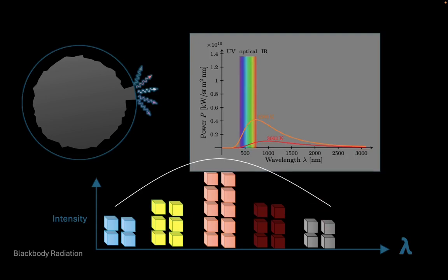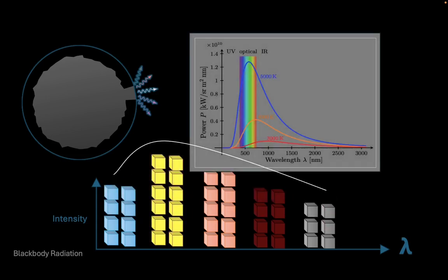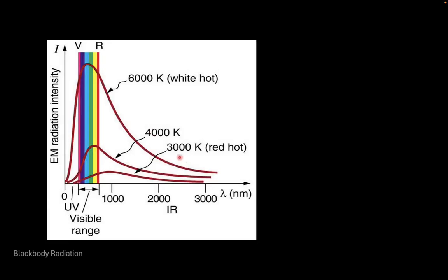In addition, the wavelength corresponding to peak intensity decreases. As we can see here, the wavelength corresponding to peak intensity at 3000 Kelvin is much larger than the wavelength corresponding to peak intensity at 5000 Kelvin.